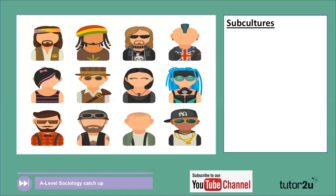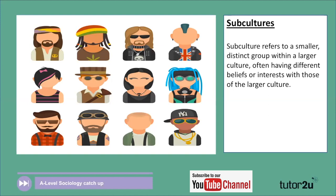Finally, subcultures. Have a look at the image — you may be able to spot a punk, a goth, a hipster, a rapper, a Rastafarian, and a hippie. Subcultures refer to a smaller, distinct group within a larger culture — sometimes defined as a group within a group. These subcultures often have different beliefs or interests from those of the larger majority group. So although they exist within mainstream society, they may be part of a smaller, distinct breakoff group.